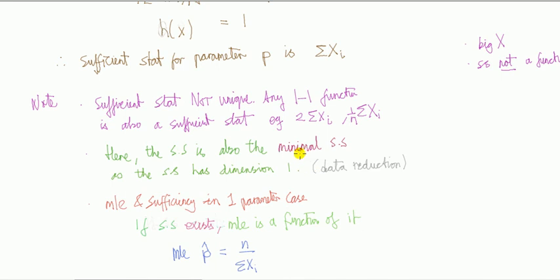So in that case it's called the minimal, and from the first bullet point you can see that a minimal sufficient statistic is also not unique. Any one-to-one function of this is also minimal.